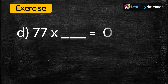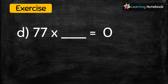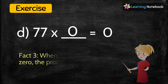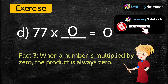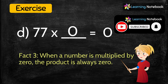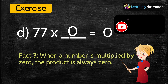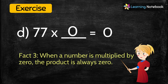The next question is: 77 multiplied by blank equals 0. The answer is 0, because we know that when a number is multiplied by 0, the product is 0.